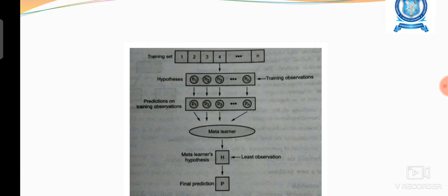The meta learner combines all the predictions, analyzes each and every one, and produces the final hypothesis, a combined hypothesis. From the combined final hypothesis, the final prediction will be taken so that the accuracy level of the final output will be much higher.